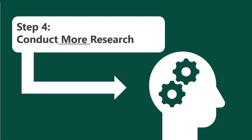Step 4: conduct more research. At this point, you may want to switch over from Google to use more academic sources through the library. As you begin to conduct more research and see what other researchers are saying or are focused on, you will naturally begin to narrow or even change your topic as you find another aspect that interests you.